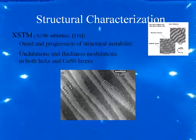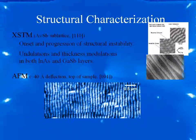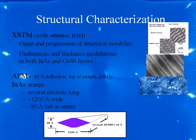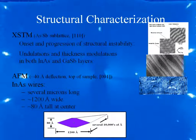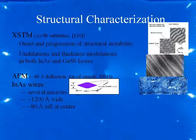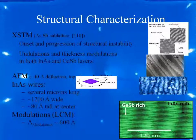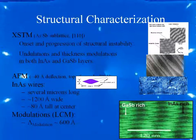This is a close-up of the AFM image showing that the nanostructures are about 10 microns in length. The indium arsenide wires are several microns long, 1200 angstroms wide, and about 80 angstroms tall center to center. This is considered an indium arsenide quantum wire. The bright and dark stripes in the STM image represent the variation in composition: the bright regions are the gallium antimonide-rich regions and the dark regions are the indium arsenide-rich regions. Therefore you have indium arsenide wires surrounded by a gallium antimonide shell.